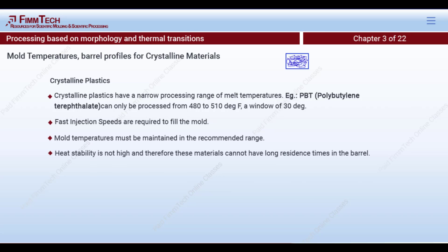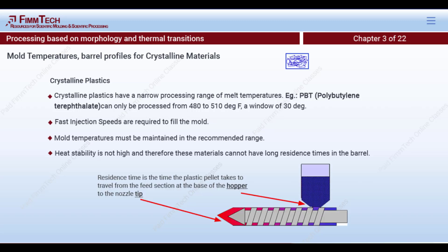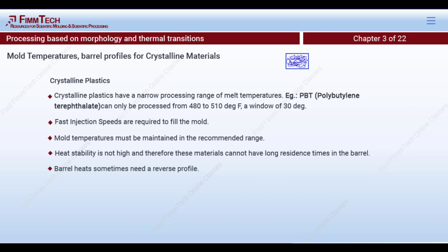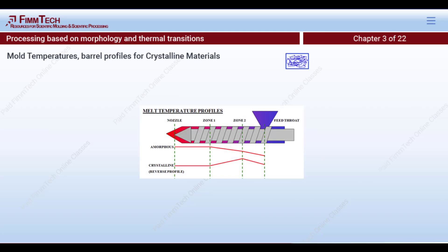The heat stability for crystalline materials is not very high, so they cannot have long residence times inside the barrel. Residence time is the amount of time the plastic spends inside the barrel of the molding machine — the longer it stays, the higher the chances of degradation. Crystalline materials may also need what is called a reverse barrel profile. In the feed section, the plastic should soften before it moves into the next zone.